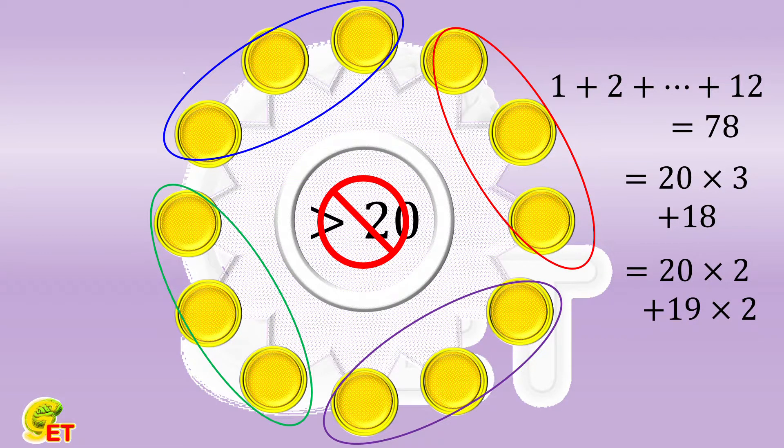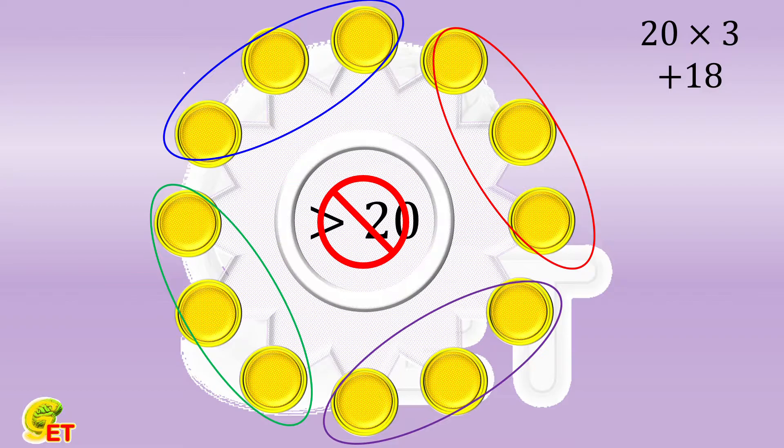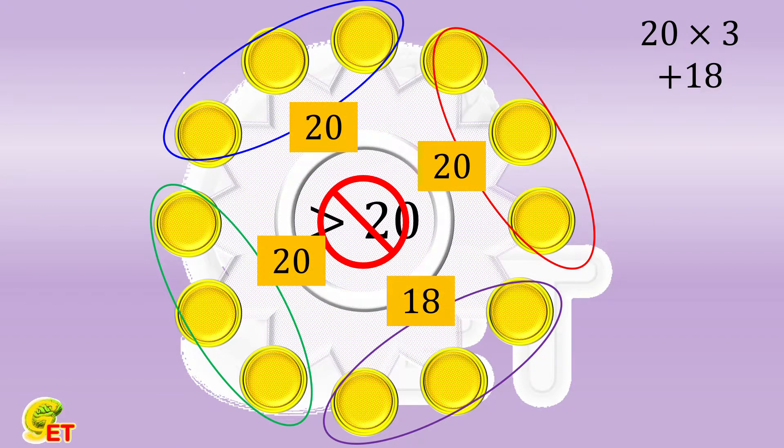Next, let's see if we can make it in either of these two cases. For the first one, that is triple 20 plus a single 18. Let's assume that the summations of these three groups are 20, and that of the remaining group is 18.